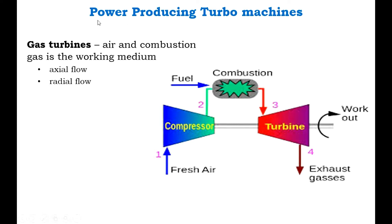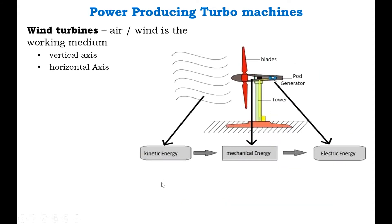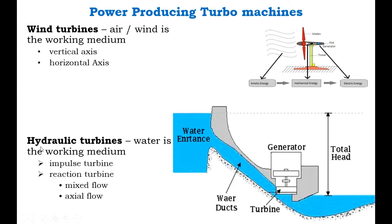The next classification of Turbomachines is based on power production. Power-producing types include: the gas turbine, where air and combustion gas is the working medium, classified into axial flow and radial flow; the steam turbine, where steam is the working medium; the wind turbine, where air or wind is the working medium, classified into vertical axis and horizontal axis; and the hydraulic turbine, where water is the working medium.